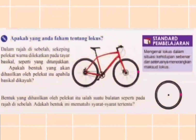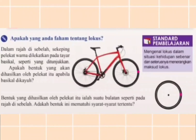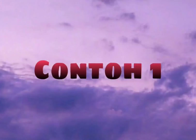Dalam rajah di sebelah, sekeping pelekat warna dilekakan pada tayar basikal. Seperti yang ditunjukkan, apakah bentuk yang akan dihasilkan oleh pelekat itu apabila basikal dikayu? Bentuk yang dihasilkan oleh pelekat itu ialah sebuah bulatan seperti pada rajah di sebelah.